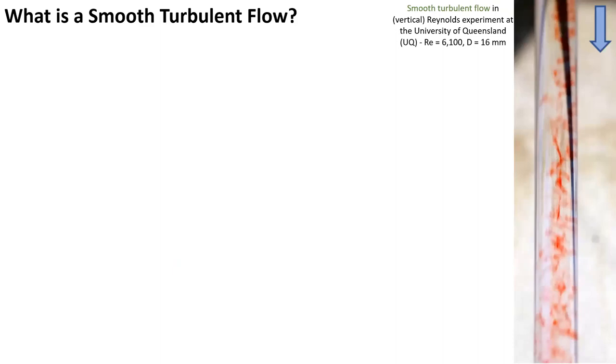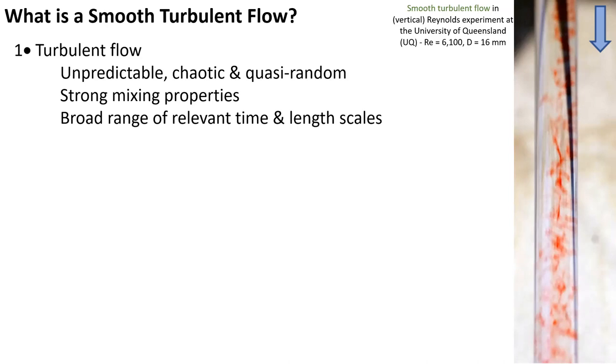As a starting point, what is a smooth turbulent flow? First and foremost, it is a turbulent flow. That is, a flow characterized by unpredictable, chaotic, quasi-random motion with strong mixing properties and a broad range of relevant time and length scales.